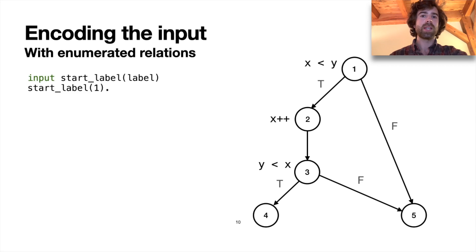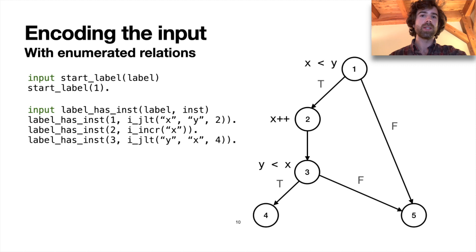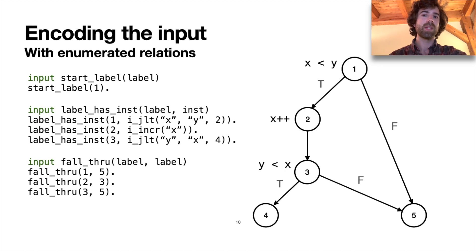And then we'll do it partly through enumerated relations that will actually describe the shape of the graph. So we'll have a relation saying what the entry point of the graph is, another one relating a label to the instruction at that label, and then a third one specifying fall-through behavior.